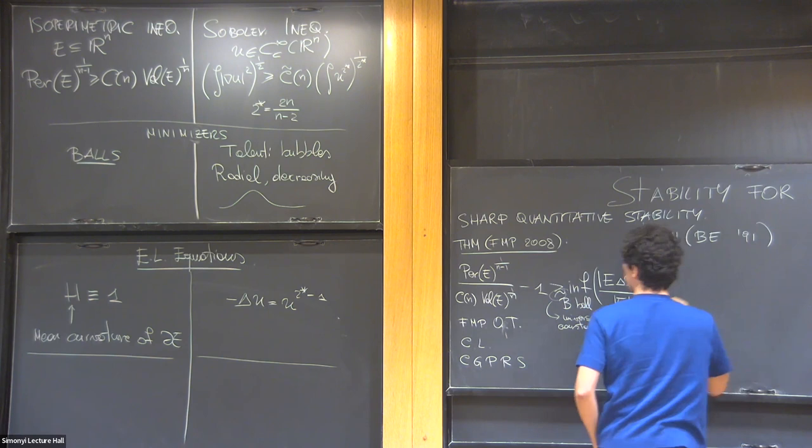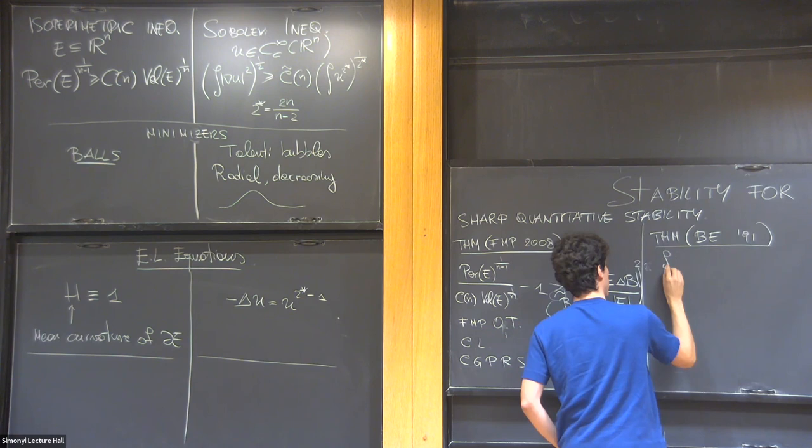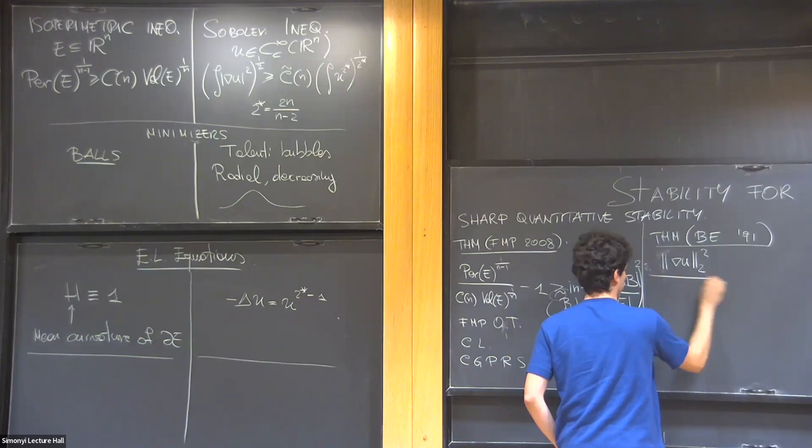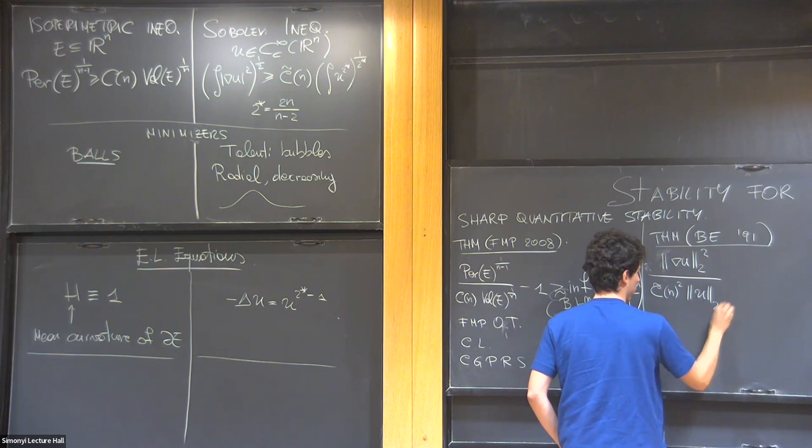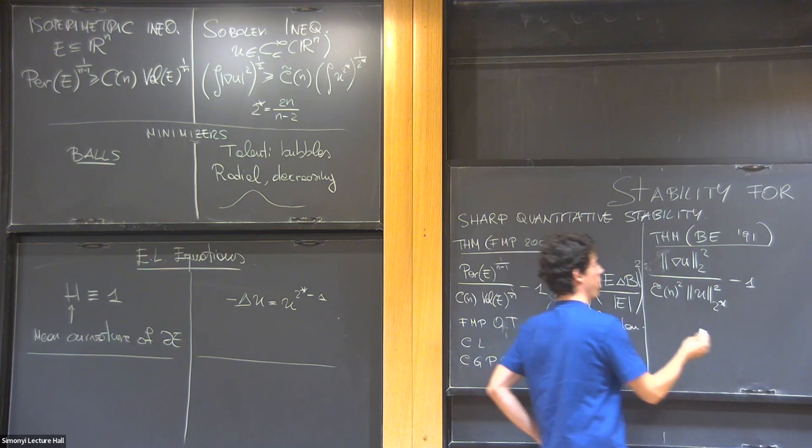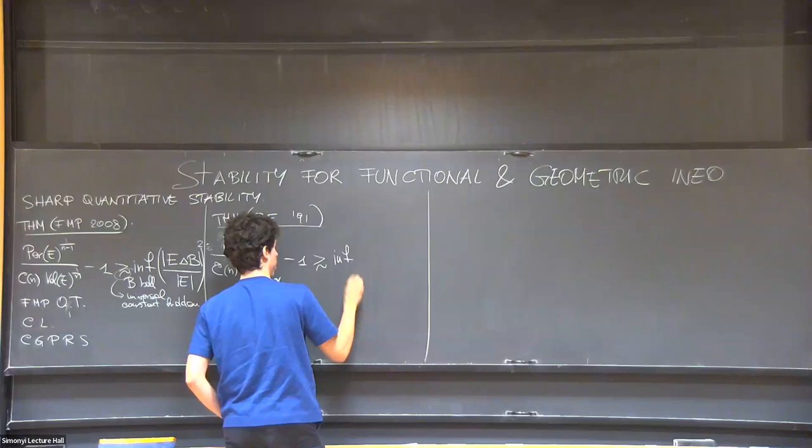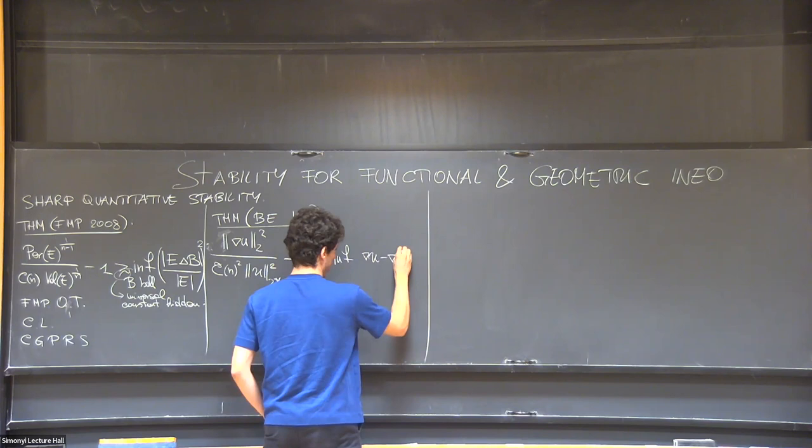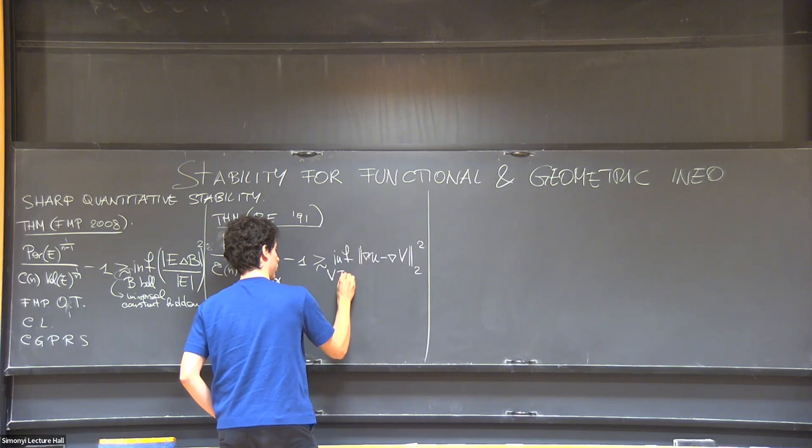And as you'll see, the statement is exactly what you would expect. So you take the Sobolev ratio. The Sobolev inequality tells you that this is greater or equal than zero. But they're able to say that this controls a distance to Talenti bubbles in a very strong norm in fact.